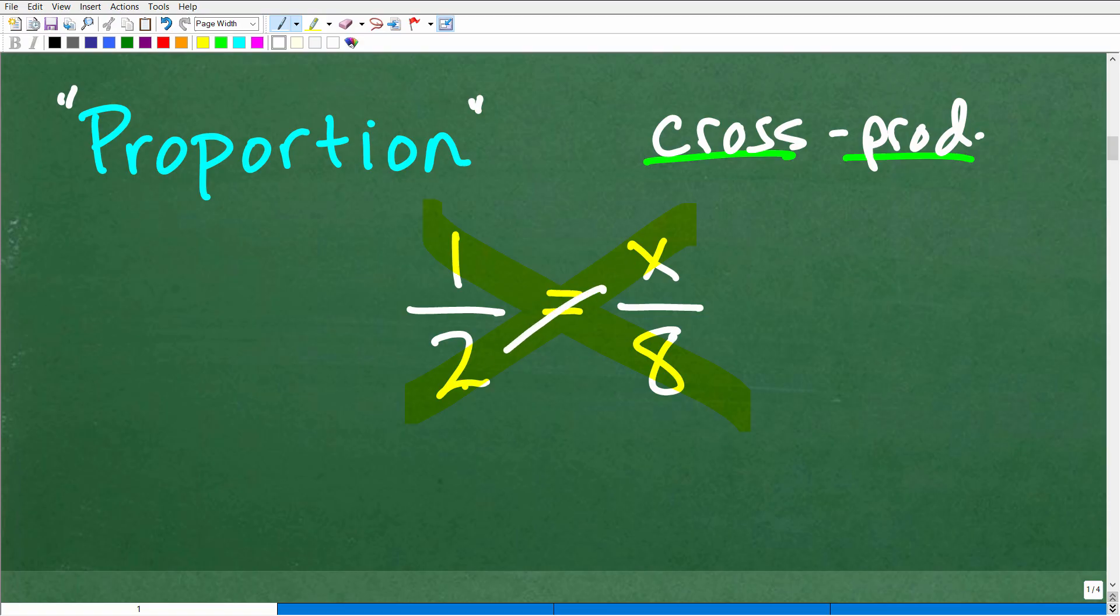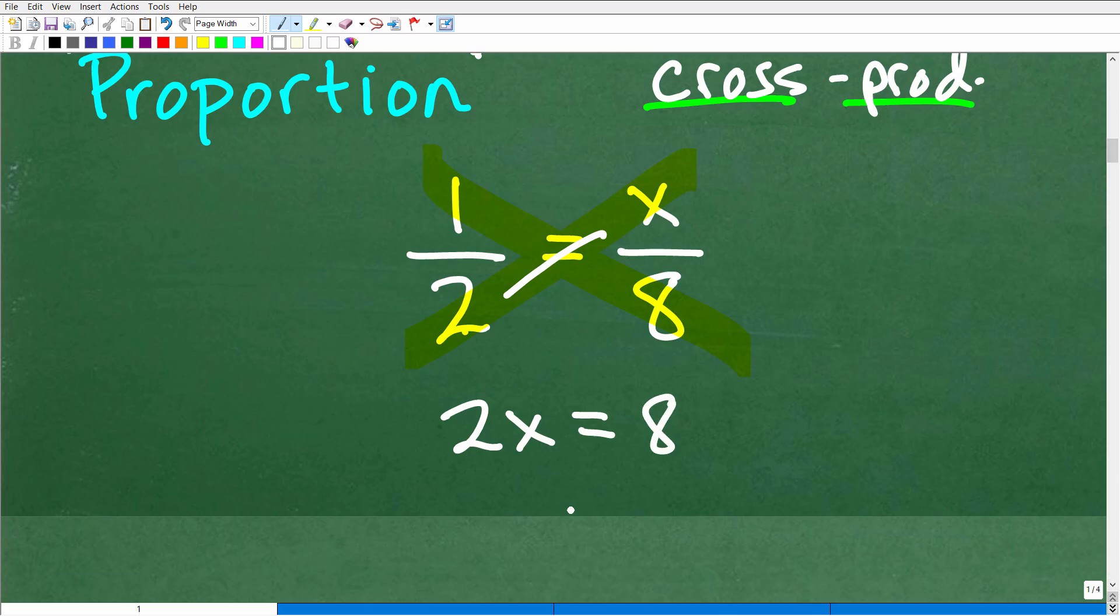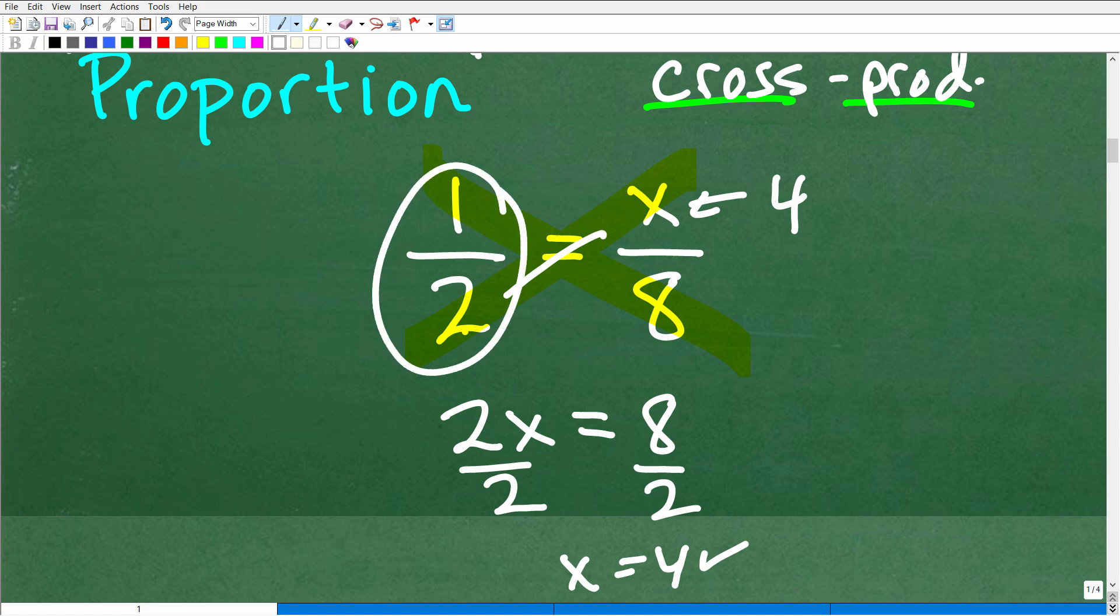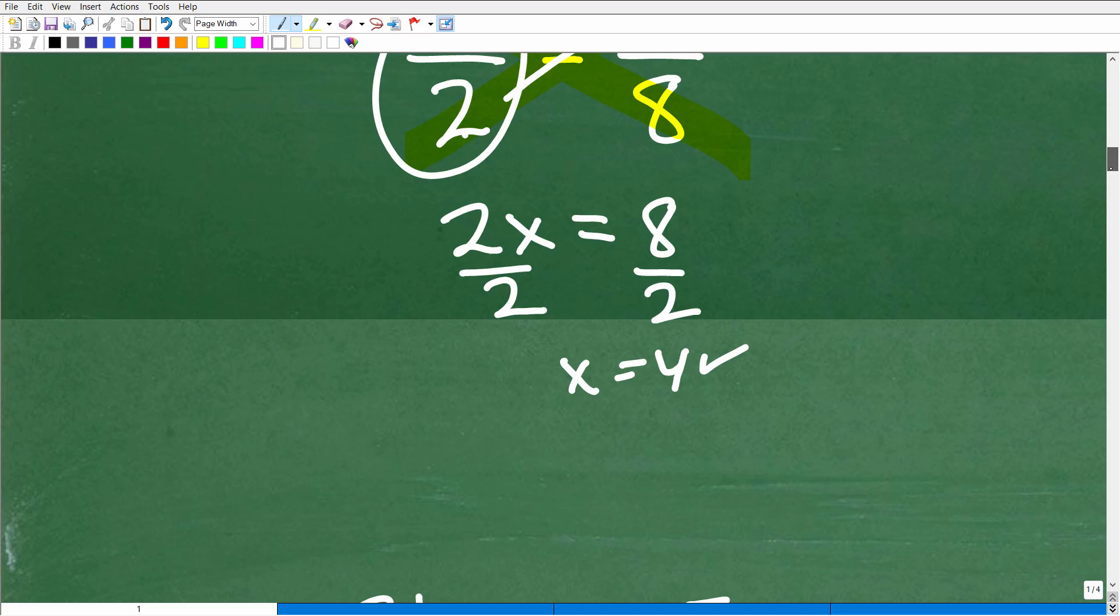But what you want to do is use the cross product. So, you've got 2 times x is 2x is equal to 1 times 8, which of course is 8. Now, I can solve this nice basic algebra equation, divide both sides of the equation by 2, and again, x is equal to 4. Okay, so this is going to be 4, which we knew it was, or 4 over 8 is the same thing as 1 half. So, hopefully you have a pretty good understanding of the cross product, and if you didn't, now you do.